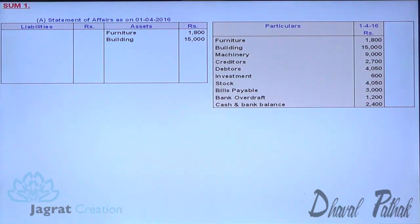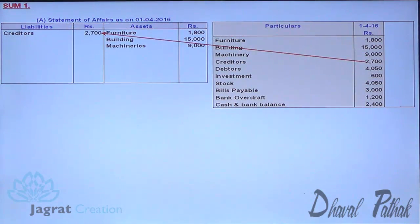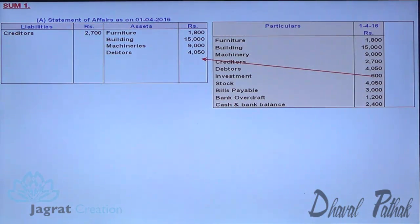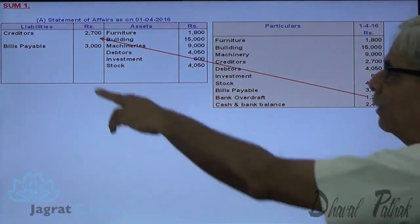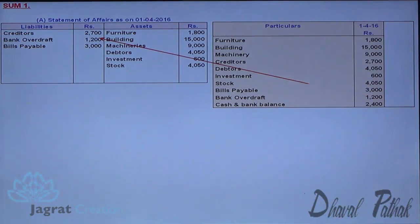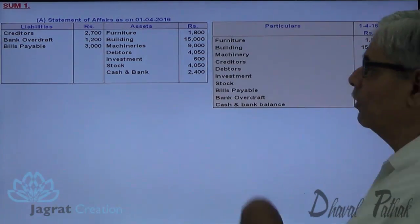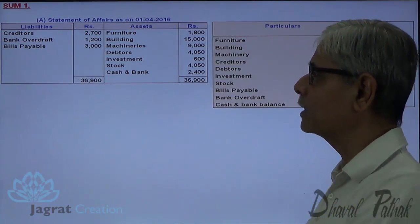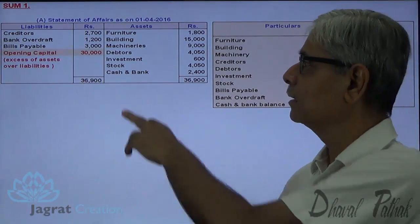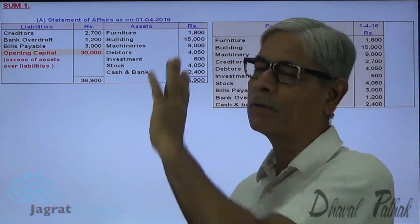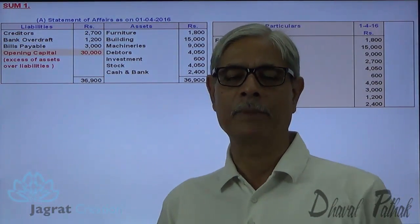Furniture and building are assets, machinery is an asset. Creditors I write on the liability side, debtors I write on the asset side, investments, stock, then bills payable being a liability, bank overdraft is also a liability, cash and bank balance on the asset side. Total of assets minus total of liabilities gives me the opening capital — 30,000. That is the excess of assets over liabilities. This is how I find out the capital at the beginning of the accounting period.